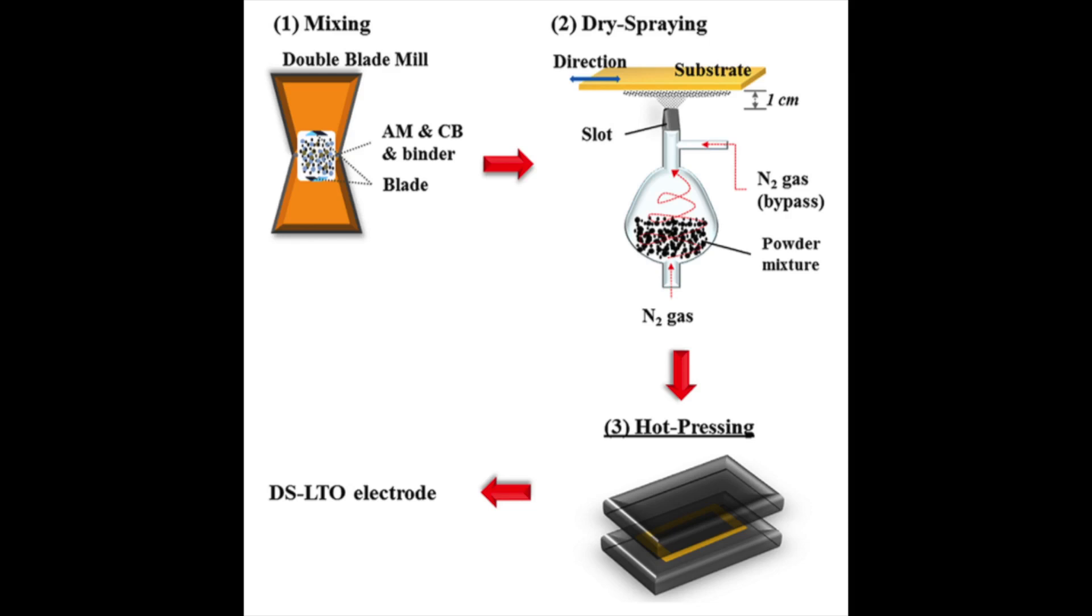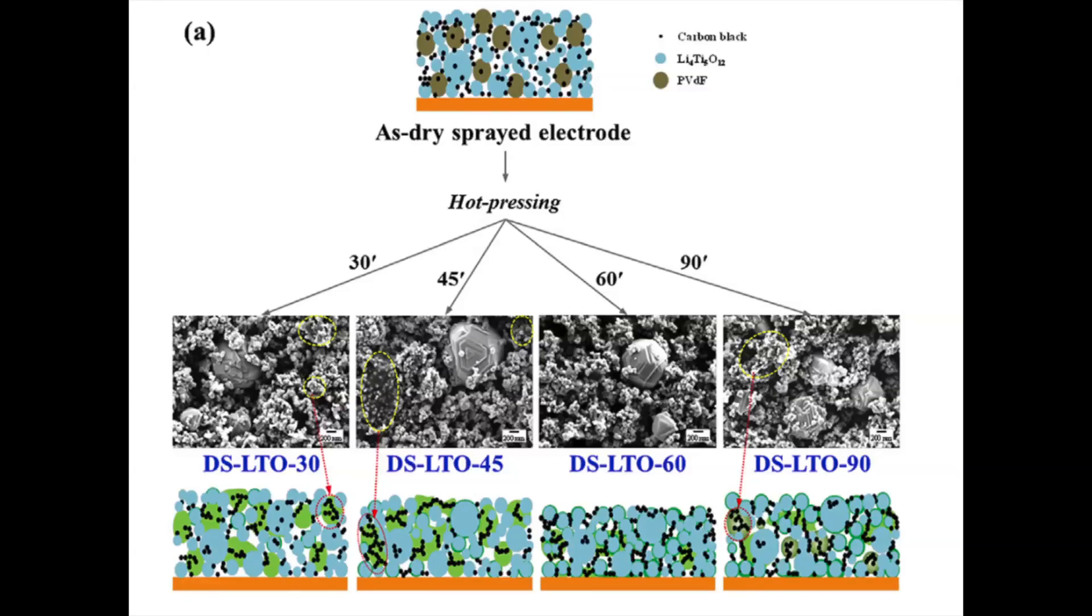And in this case, the slight difference of a hot press was used instead of preheating and then passing the electrode through rollers. A higher temperature of 175 Celsius was used, very close to the 177 Celsius melting point of PVDF.